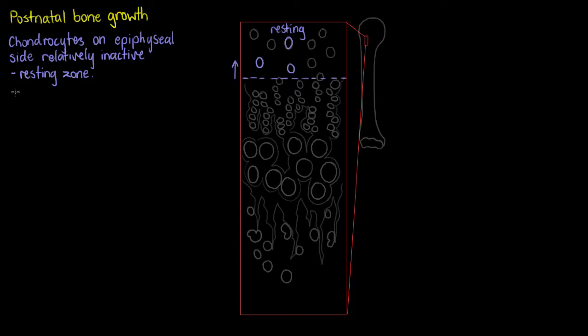Just below the resting zone, when we get to the diaphysis side, that's when we start to see things happening. In this area we are going to notice that chondrocytes are rapidly increasing in number, and stacking on top of each other similar in appearance to a stack of coins.